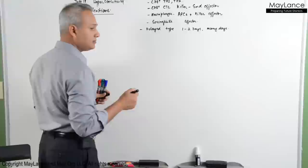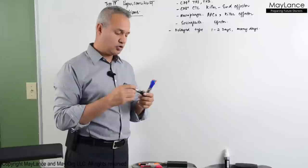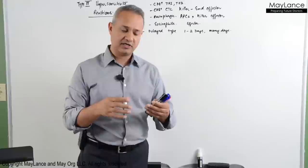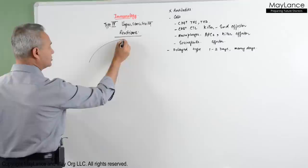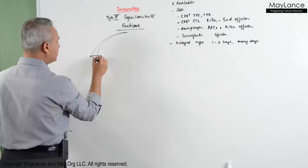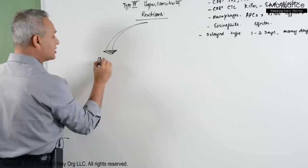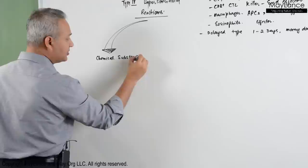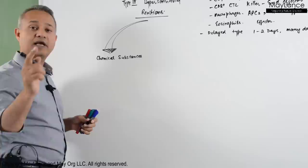Let us talk about the two subtypes of this reaction. Type 4 hypersensitivity has a cytotoxic type and a macrophage type. One subtype is based on hypersensitivity reaction to chemical substances.